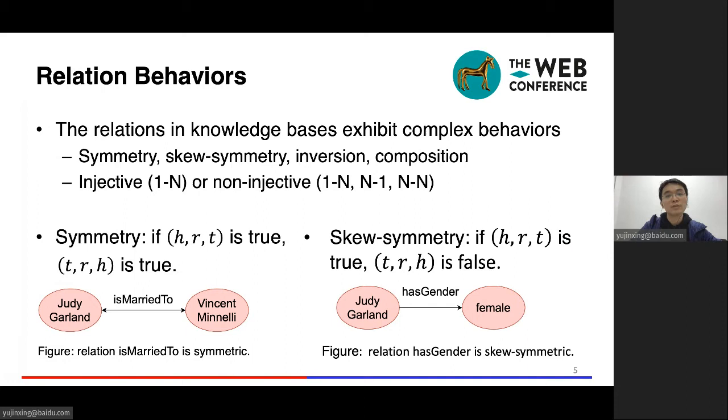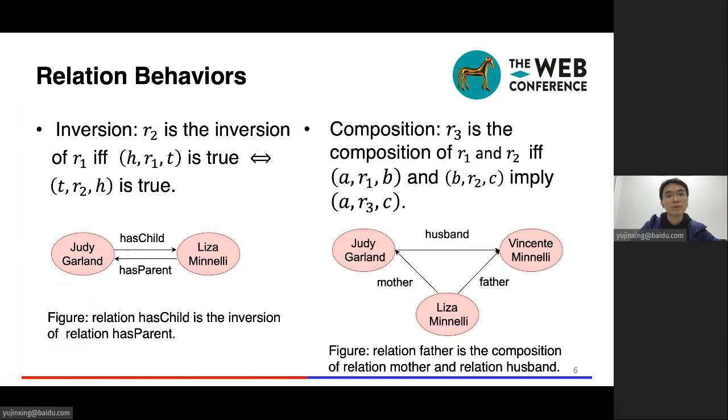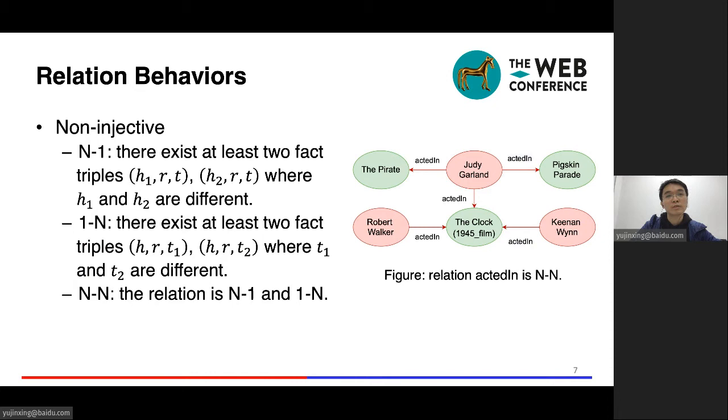A major challenge for KGE is that the relations have complex behaviors. A relation can be symmetric, like is married to. A relation can be skew symmetric, like has gender. One relation may be the inversion of a relation or the composition of two relations. One relation may be non-injective. It can be n-to-one, where two fact triples of a relation have different heads. It can be one-to-n, where two fact triples of a relation have different tails and the same head entity. It can also be both n-to-one and one-to-n. Then we call it n-to-n. To our knowledge, existing KGE methods do not have theoretical guarantees to model these complex relation behaviors.